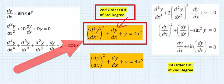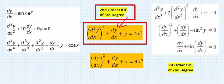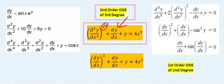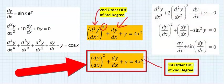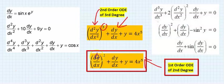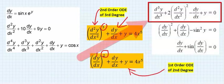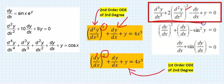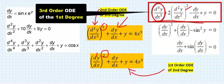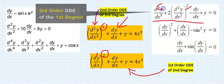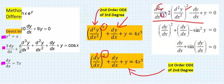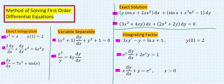This is a second order ordinary differential equation of the third degree, and this is a first order differential equation of the second degree — even though there is a two here. This is a third order differential equation because the highest power here is three.